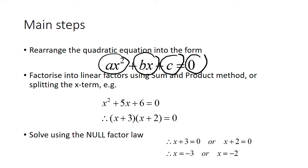So for example if we have a quadratic of this form here on the left-hand side, we can factorize this into two linear factors: x plus 3 multiplied by x plus 2, and that equals zero. Once we factorize it into this product of linear factors, what we can do is solve using the null factor law.